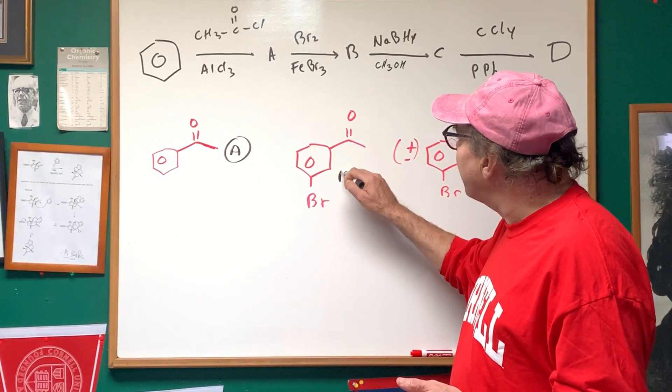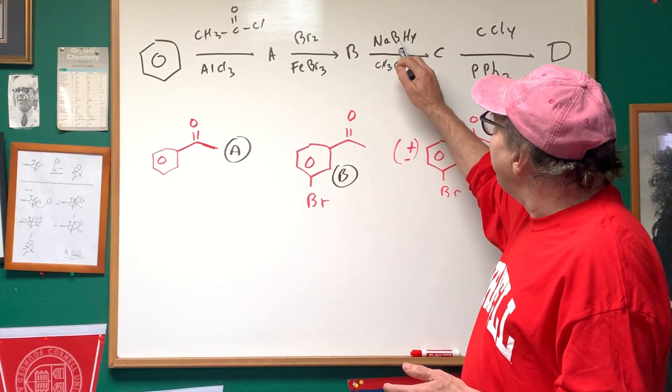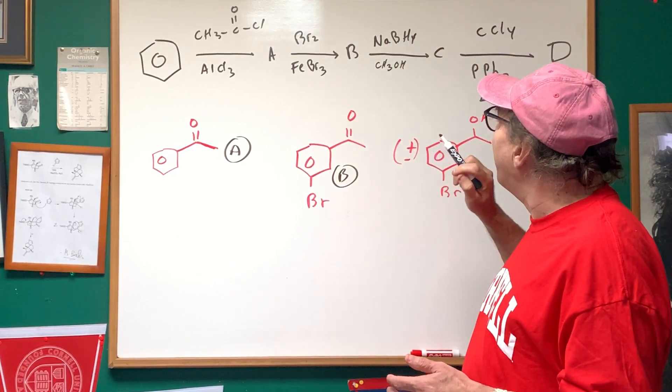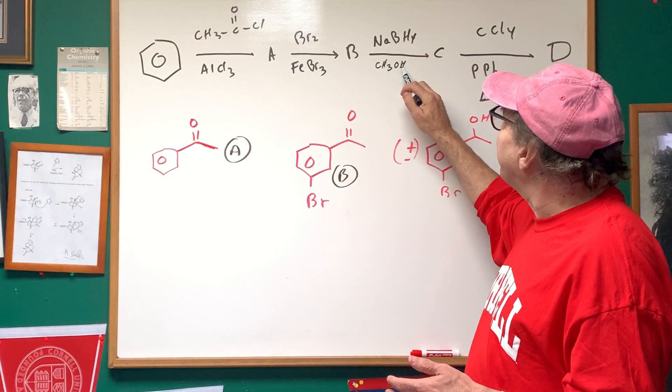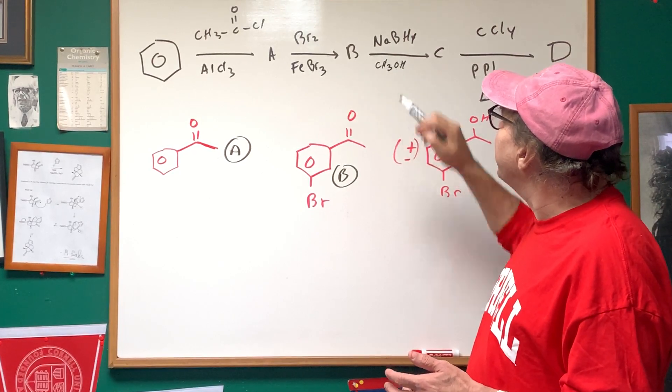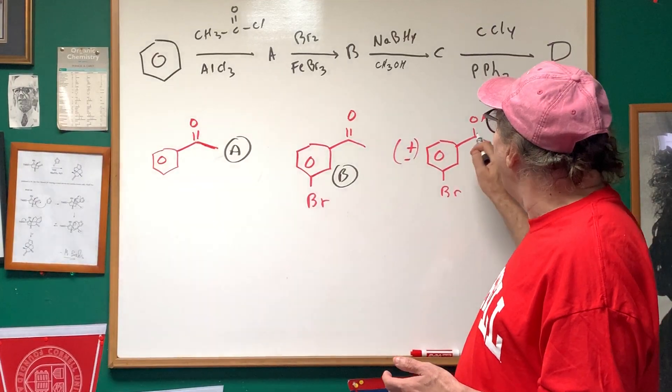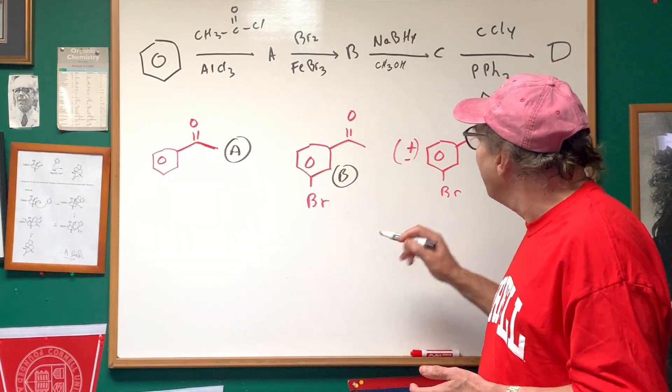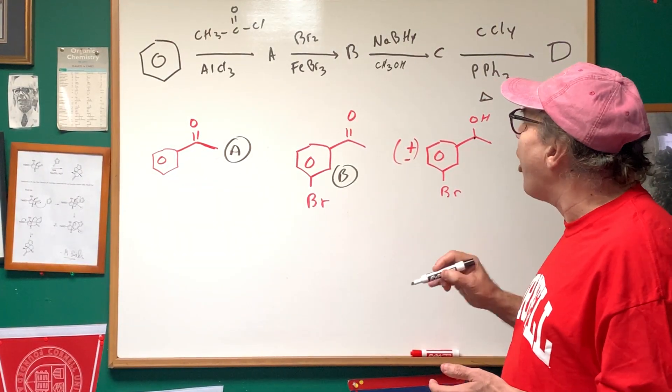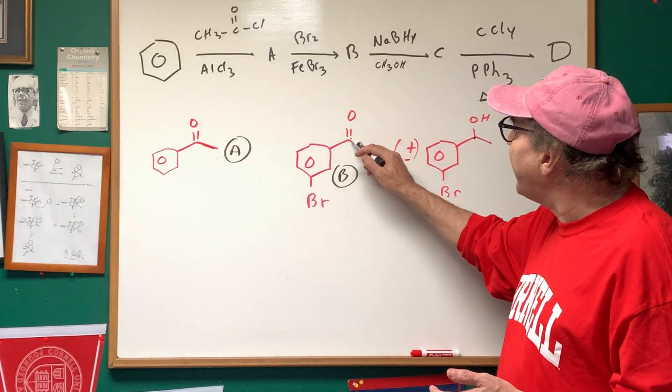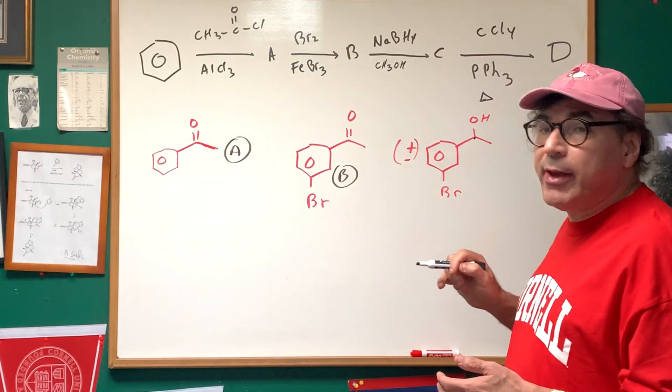And then we're going to reduce down this carbonyl with a nice polar protic solvent. We can use water or methanol, and that gives this compound here. Notice we've got a chiral carbon after we've reduced down the ketone to the secondary alcohol.